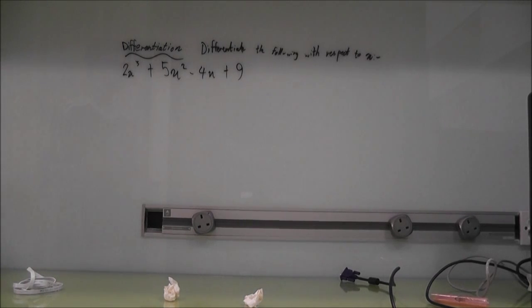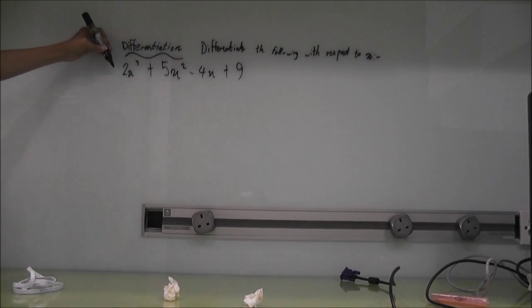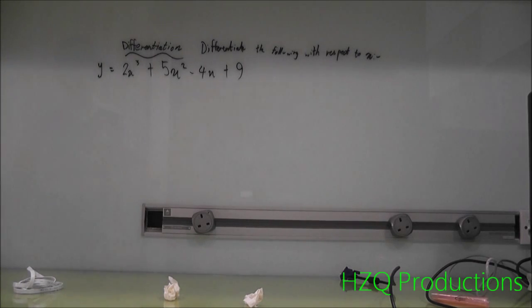Now, differentiate this if we reach back to x. 2x³ plus 5x² minus 4x plus 9. Actually, all of this is equal to y. Now, we have that equation. This is an equation. Okay, how do we differentiate this?